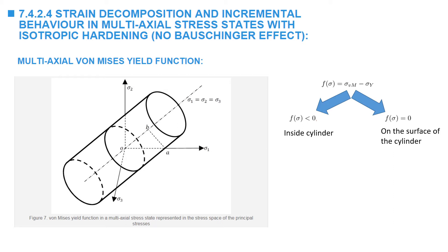As mentioned in a previous lecture on stress, the von Mises yield function describes an infinitely long cylinder around the axis described by sigma 1 = sigma 2 = sigma 3 in the space of the principal stresses. A point inside the surface, where f(sigma) < 0, is characterized by elastic deformations only. The surface of the cylinder is the condition f = 0.